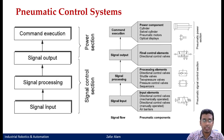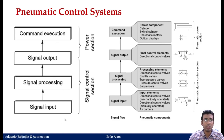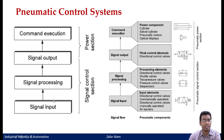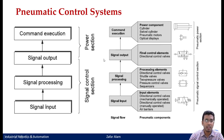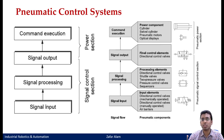In the pneumatic control system signal flow diagram, you again see the same: signal input, signal processing, signal output, and command execution. In the input elements, we had mechanically or manually operated direction control valves — here a three-by-two push button valve. Ultimately these valves give pneumatic signals. The signal input is a pneumatic signal that is a pressurized line.